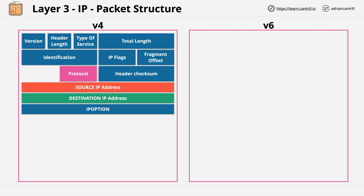If you're storing TCP data inside a packet, this value will be 6. For pings, known as ICMP, this value will be 1. And if you're using UDP as the layer 4 protocol, then this value will be 17.